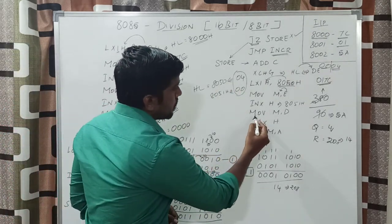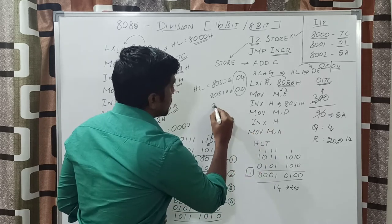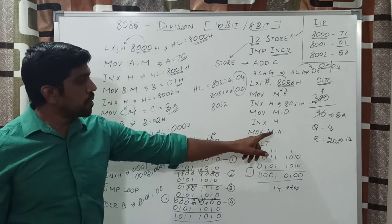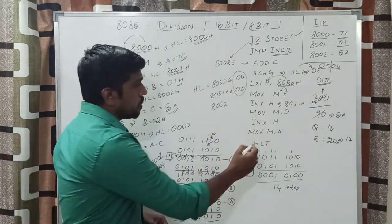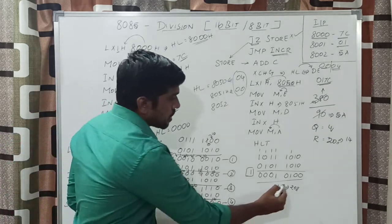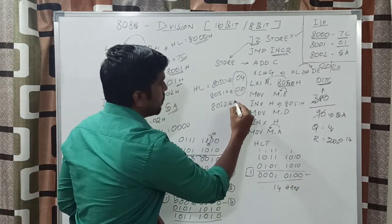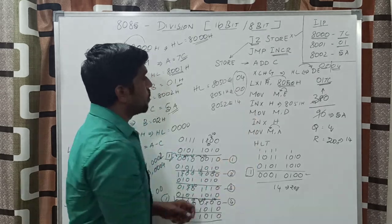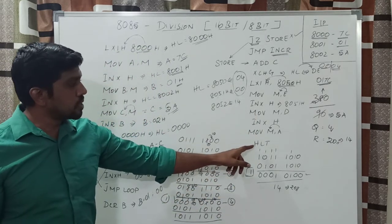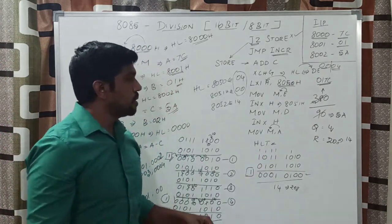The next instruction is INX H — increment the HL pair content to 8052h. Then MOV M, A: whatever value is present in the A register, that content is moved to memory location 8052h. The A register content is 14h. This content is transferred to memory location 8052h — it is the remainder value. The final instruction is HLT, which halts and closes the program.